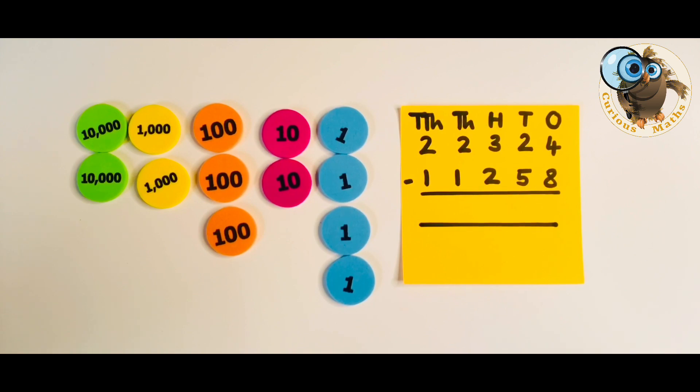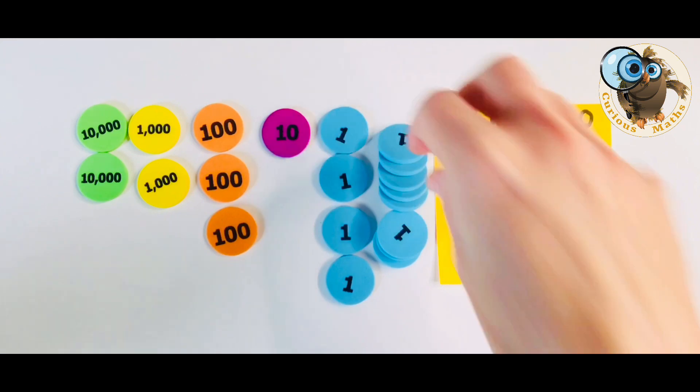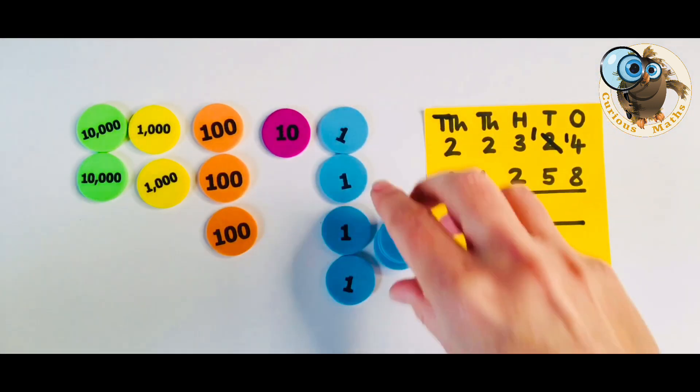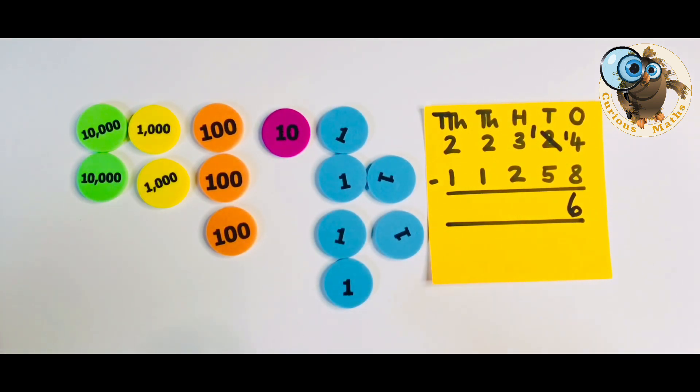So with a number like this 22,324 subtract 11,258 I definitely introduce it to my class or if you're a parent your child at home through a build method or possibly even a draw. So I'm just going to show you what that would look like. So once again I've only represented the larger number in this case because I'm going to take 11,258 from this number. So starting in the ones column I've got four ones and I need to subtract eight ones. Well that will give me a negative number so I'm going to exchange.